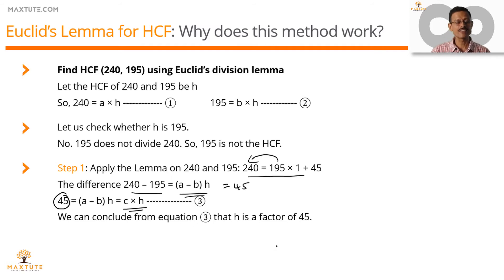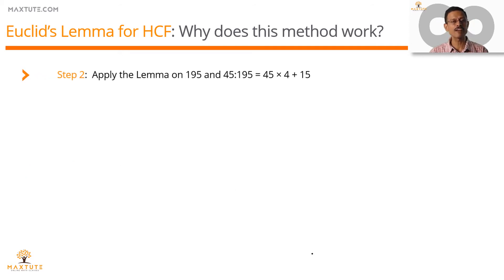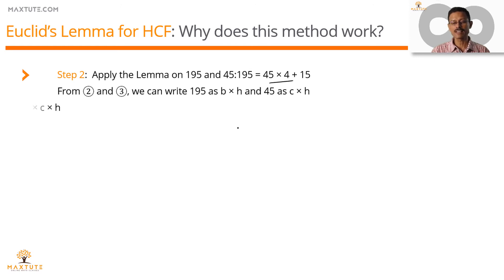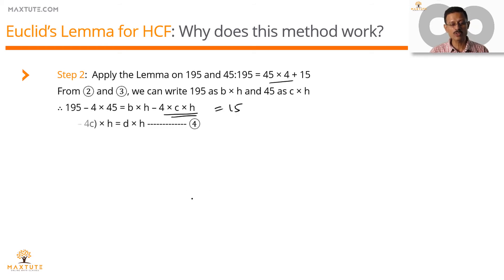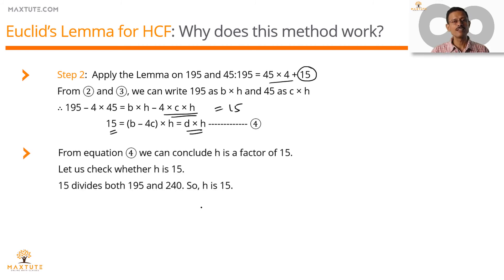The question is: is 45 the HCF? If 45 were the HCF it would divide both 240 and 195 — it does not, so 45 is not the HCF; it is merely a multiple of the HCF. We recursively apply the lemma in step two on 195 and 45: 195 = 45 × 4 + 15, giving (B − 4C)·H = D·H = 15. So 15, the difference between 195 and 4 times 45, is also a multiple of the HCF. Checking: does 15 divide both 240 and 195? Yes. Therefore 15 is the HCF. The key principle: if A and B have HCF H, the difference between A and B will also have HCF H.